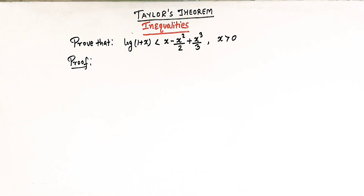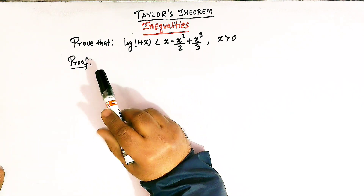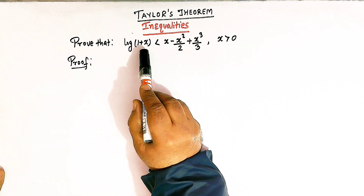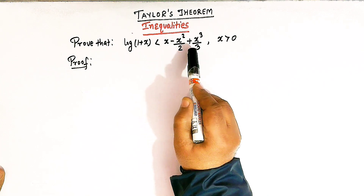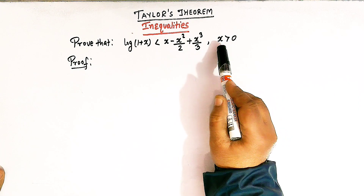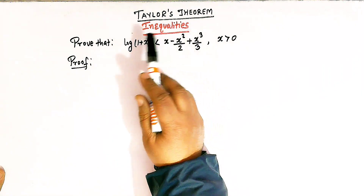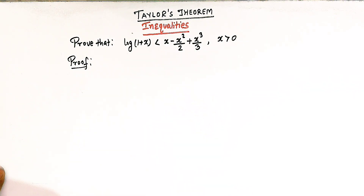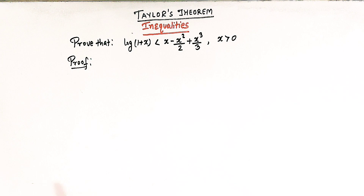Here we have to prove this inequality in which we have to show that log of (1 + x) is less than x minus x squared over 2 plus x cubed over 3, for all values of x greater than 0. We'll prove this inequality with the help of Taylor's theorem. But before proving this inequality, let us briefly discuss Taylor's theorem.